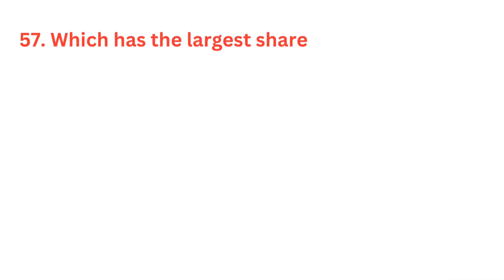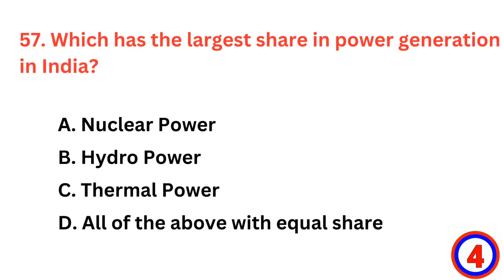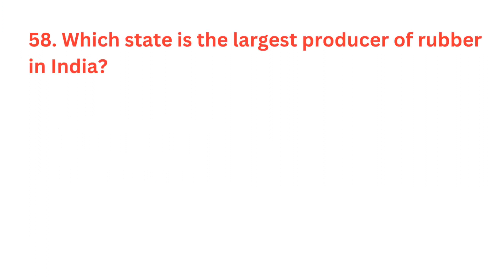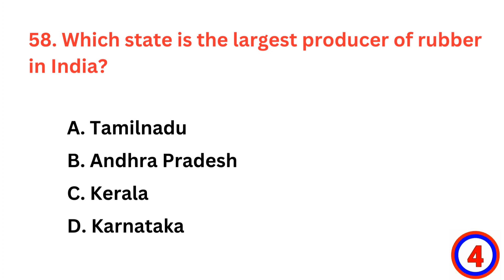Which has the largest share in power generation in India? The correct answer is option C, thermal power. Which state is the largest producer of rubber in India? The correct answer is option C, Kerala.